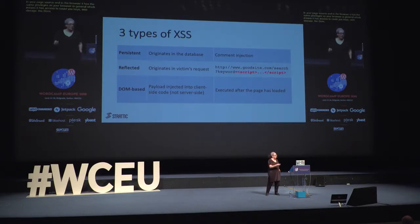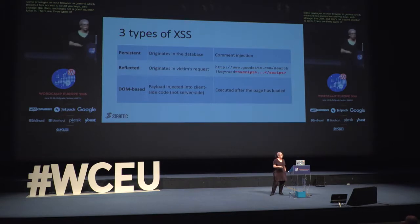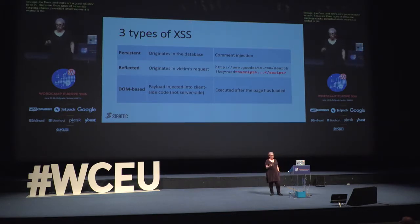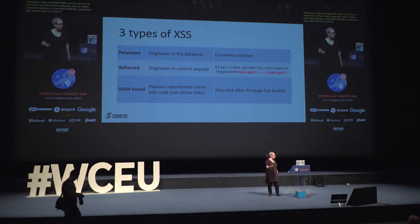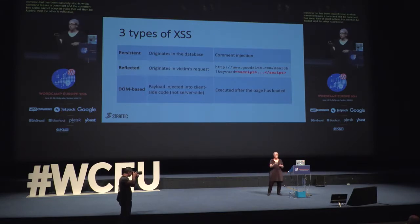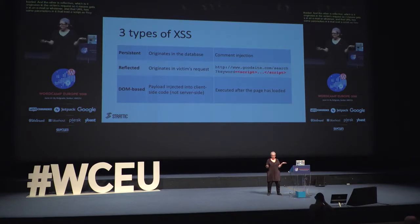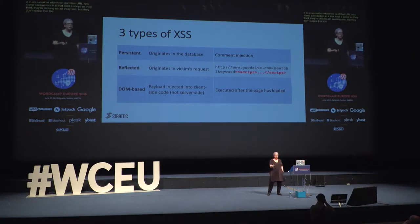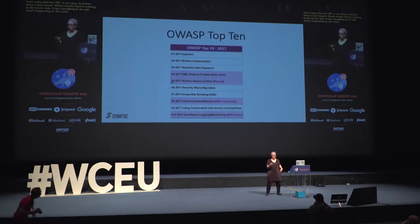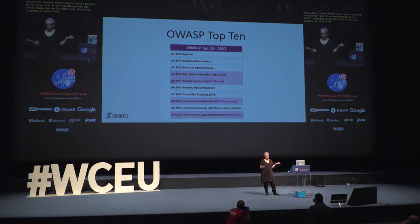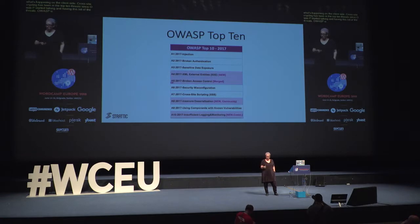There are three types of cross-site scripting attacks. Persistent, which is related to the server and originates in the database — one example is when someone leaves a comment that contains a script which then gets loaded. The other is reflected, where it originates in the victim's request: someone gets a URL in an email that has parameters loading a script, so they think they're clicking on an okay site but don't notice the URL is not okay. And then there's DOM-based, which has nothing to do with the server side and everything to do with what's happening on the client side. Cross-site scripting has been in the OWASP top 10 threats since OWASP started publishing that annual list. OWASP is the open source collaborative security information and guidelines resource — it's very useful.